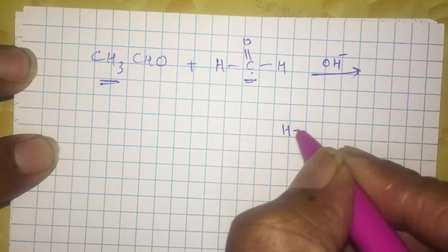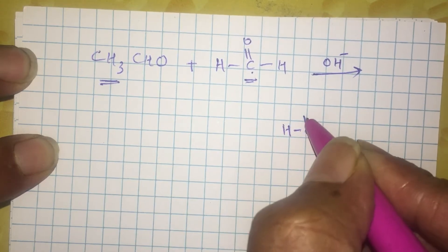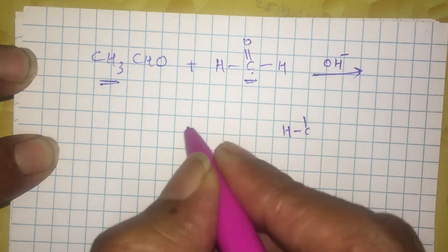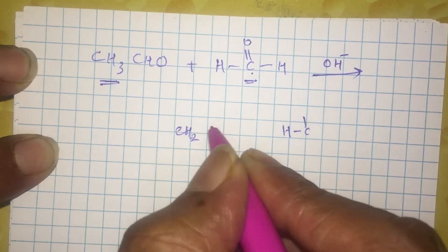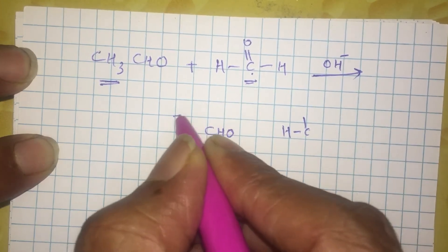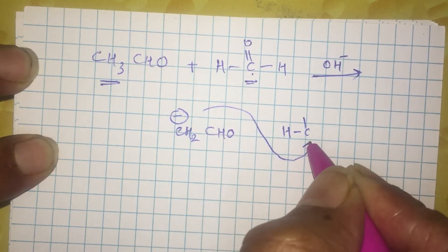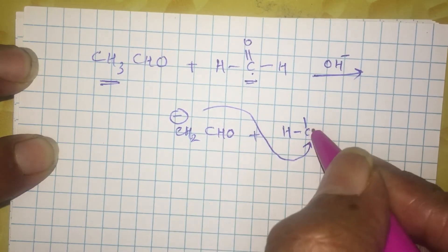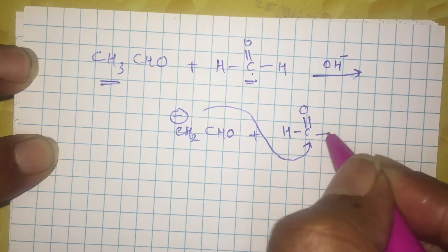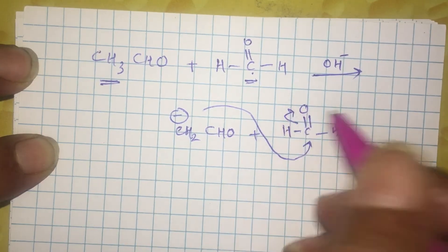So obviously the first step is this CH2CHO minus ion attacking this carbonyl carbon of formaldehyde due to the shift.